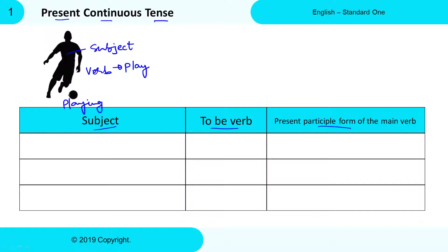In this picture, this boy is playing. See, we have added -ing to the main verb 'play,' so 'playing' is the Present Participle Form of the verb 'play.' You will understand this in a few minutes. First, we will focus on the rules to form a Present Continuous Tense.